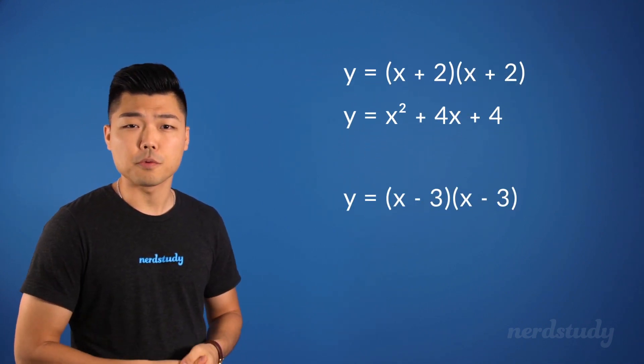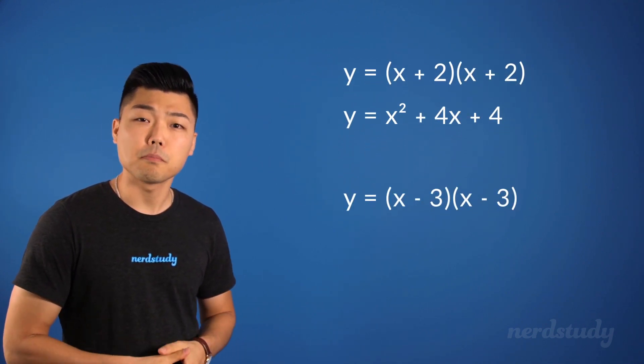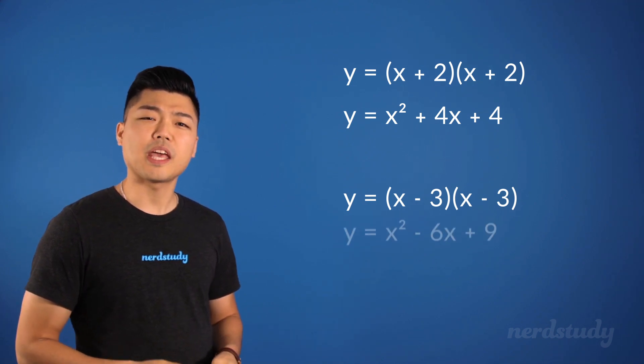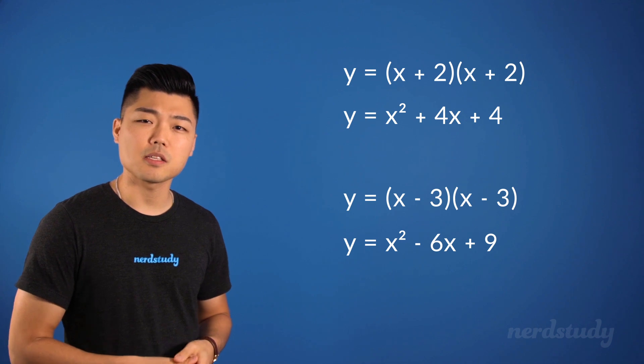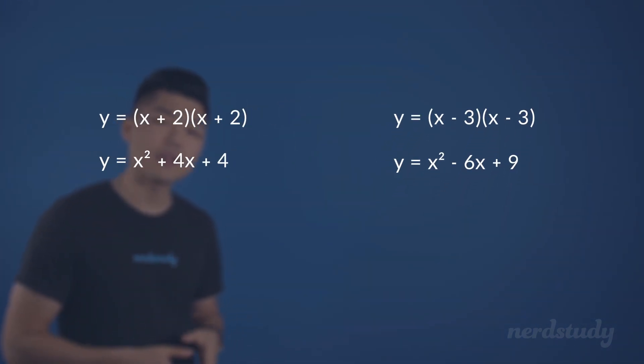Also, if we had x minus 3 multiplied by x minus 3, then we would get y equals x squared minus 6x plus 9.